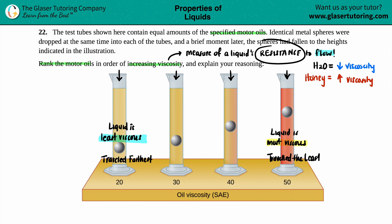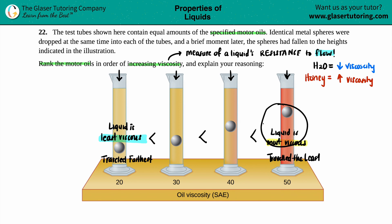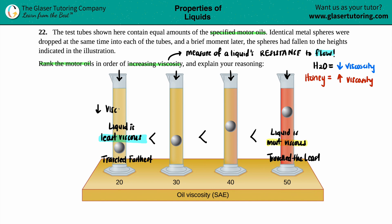Remember: high viscosity equals high resistance. So ranking the motor oils in order of increasing viscosity — this one has the highest viscosity because the ball didn't travel far, and this one is the least because it traveled the most. Using less-than signs: viscosity 20 < 30 < 40 < 50. So 20 is the least viscous, low viscosity, and 50 has the highest viscosity.